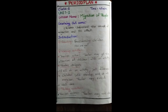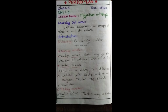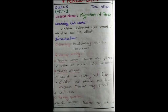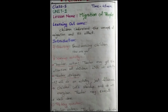I choose class 5, unit 1, lesson name Migration of People. Learning outcome: children understand the concept of migration and its effect.